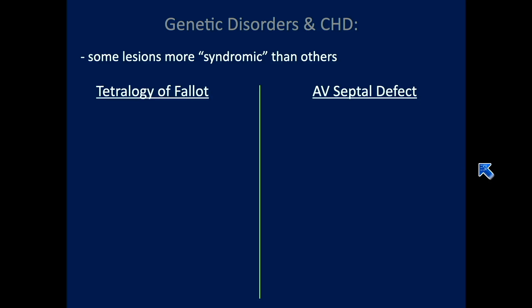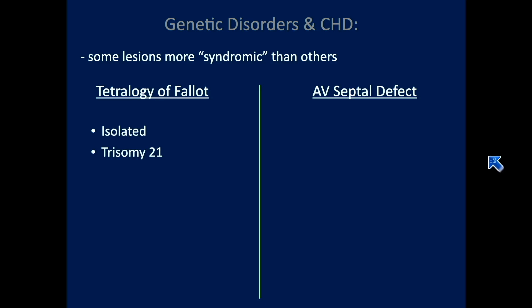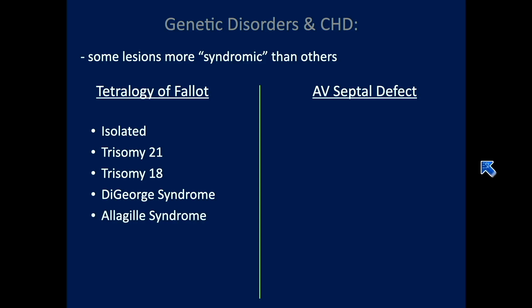Some lesions are more syndromic than others. Two that have very strong associations with underlying genetic etiologies are anything within the tetralogy spectrum as well as AV septal defects. Tetralogy can absolutely be isolated, but can be seen with trisomy 21. This is actually a typical fetal echo board question — the cardiac lesion most strongly associated with trisomy 21. Everybody answers AVSD, but it's actually tetralogy-AVSD that has the stronger association. Trisomy 18, DiGeorge, Alagille, and multiple other syndromic associations also apply.